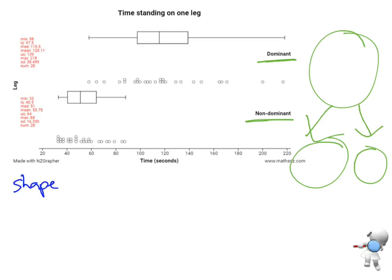Think about our shape. If I was to draw a graph over the data, for the dominant, if I look at where the median is, think about the length on that side versus the length on that side - it's slightly more spread out on the right-hand side. So I would say that this is right-skewed.